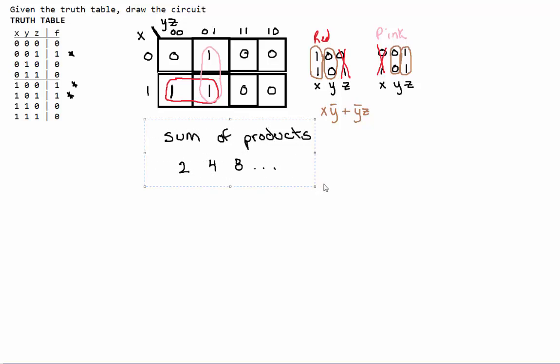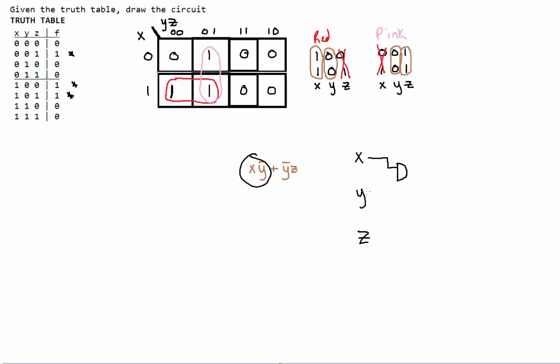Now we can draw our circuit. We have variables x, y, and z. Our very first set of terms here is x not y. We have our AND gate, because we know that a product represents AND. And since we have not y, we have to put in an inverter, so that our y input is inverted.